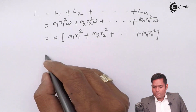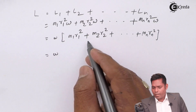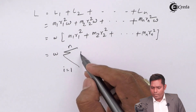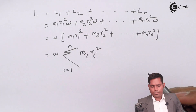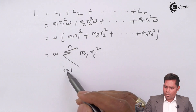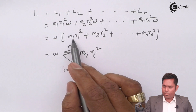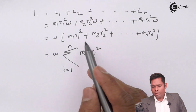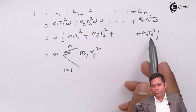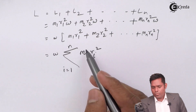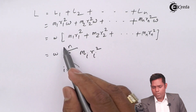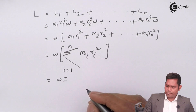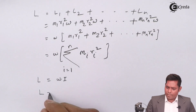This term we are already acquainted with. It is the summation from i equals 1 to N of Mi Ri squared. When i equals 1, we get M1 R1 squared; when i equals 2, we get M2 R2 squared, and so on. This summation sign means addition of all terms. This whole expression in the bracket is the moment of inertia of the rigid body, I. So finally we get L equals I times omega.